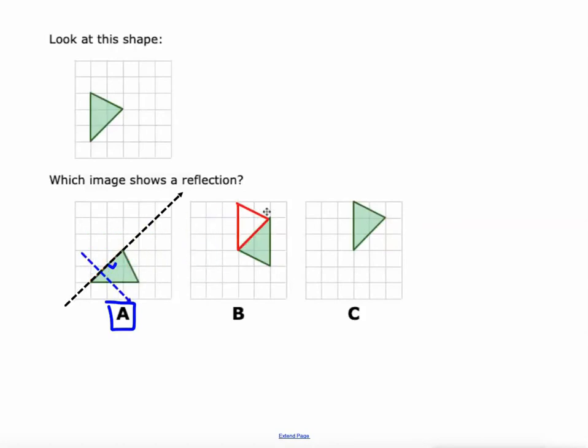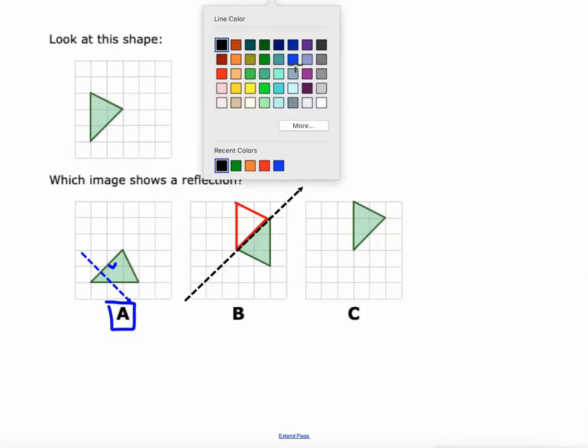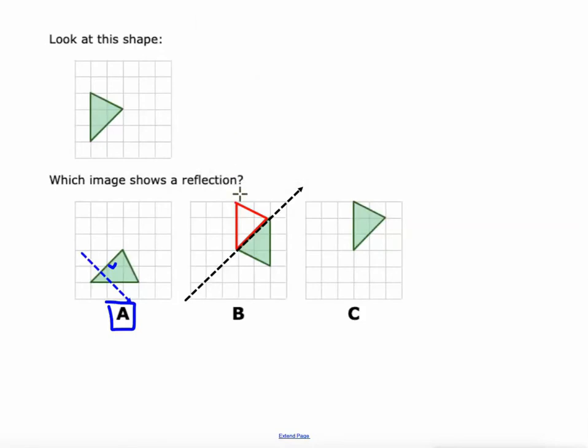So let me show you why this one isn't. So if we think that that's the line of reflection, but then you go and connect corresponding points. Is that a 90 degree angle that's formed right there between the blue and black lines? No, it's not. So that's why A is the reflection.